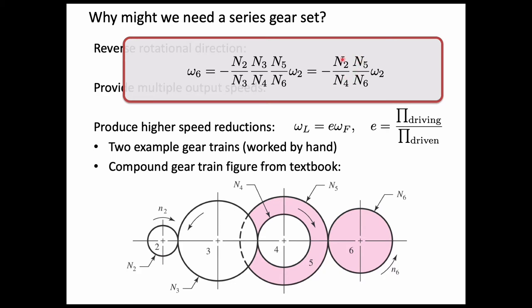The train value simplifies to N2 times N5 over N4 times N6. If we had a simple series gear train where N4 equals N5, those would cancel out and we'd just have N2 over N6. This demonstrates that in a simple series gear train, only the size of the first gear and the last gear matters.